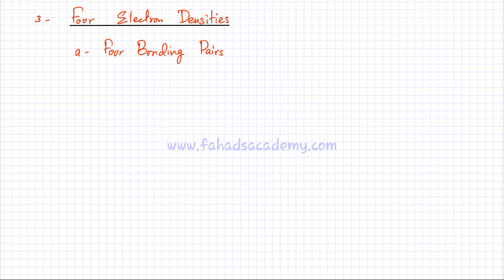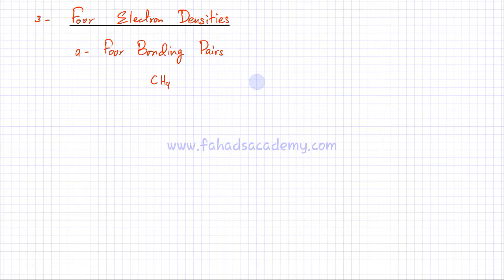An example is the CH4 molecule. Carbon is bonded to four hydrogen atoms and there are no lone pairs — just four bonds. The shape is called a tetrahedral shape. The four bonds try to stay as far away from each other as possible because they repel each other.